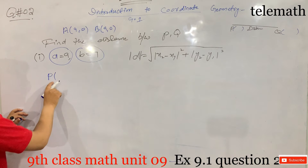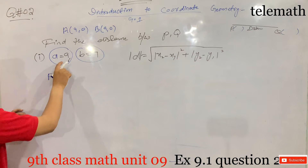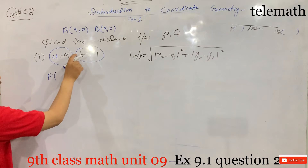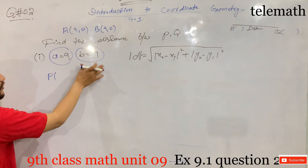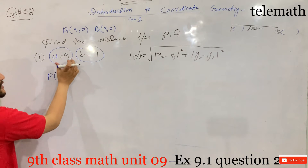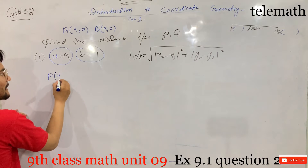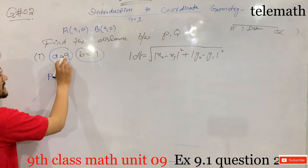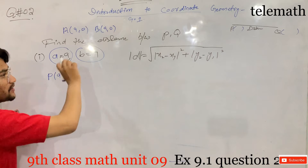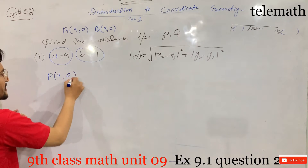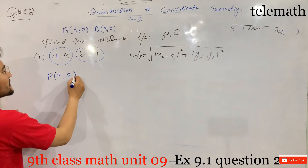We write P equals, opening bracket — since a equals 9 means x is equal to 9, and P is on the x-axis so y is 0, giving P = (9, 0). For Q, since Q is on the y-axis, x is 0 and b equals 7 means y equals 7, giving Q = (0, 7).